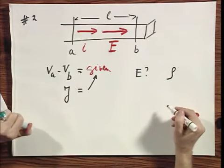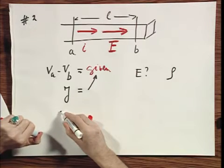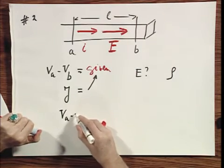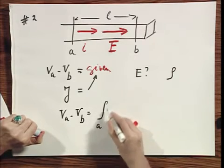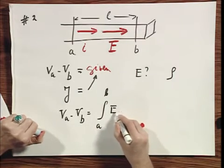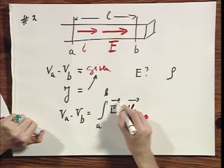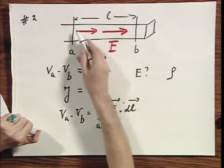Well, let's first write down what it means VA minus VB. That's the integral of going from A to B of E dot DL dot product. E and DL are in the same direction if I go from here to there.